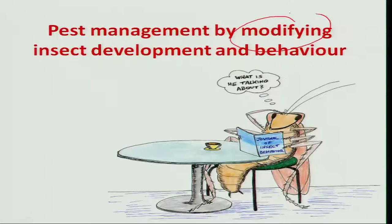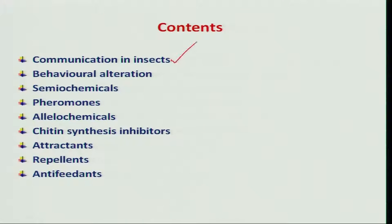Hello friends. Now we will discuss another important component of IPM: pest management by modifying insect development and behavior through both natural and synthetic chemicals. In this lecture, I am going to deal with communication in insects, behavioral aspects of insects, semiochemicals and pheromones, allelochemicals, chitin synthesis inhibitors, attractants, repellents, and antifeedants.